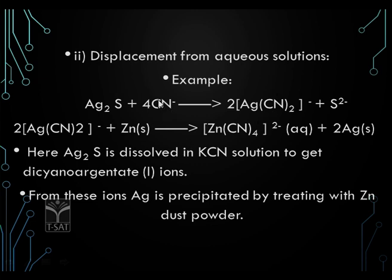For another example, here we have taken silver. This is an ore of silver — silver sulphide, also called argentite. If it is dissolved in potassium cyanide solution, we get a complex structure called dicyanoargentate ion. This is an anion, and the sulphide ions have come out — from silver sulphide the sulphide ions have been separated.